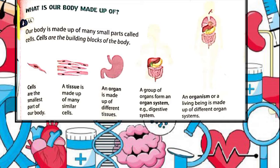The brain is also an organ of our body, located in the head, and functions as the body's control center. It is the seat of all thoughts, memories, feelings, perceptions — everything.